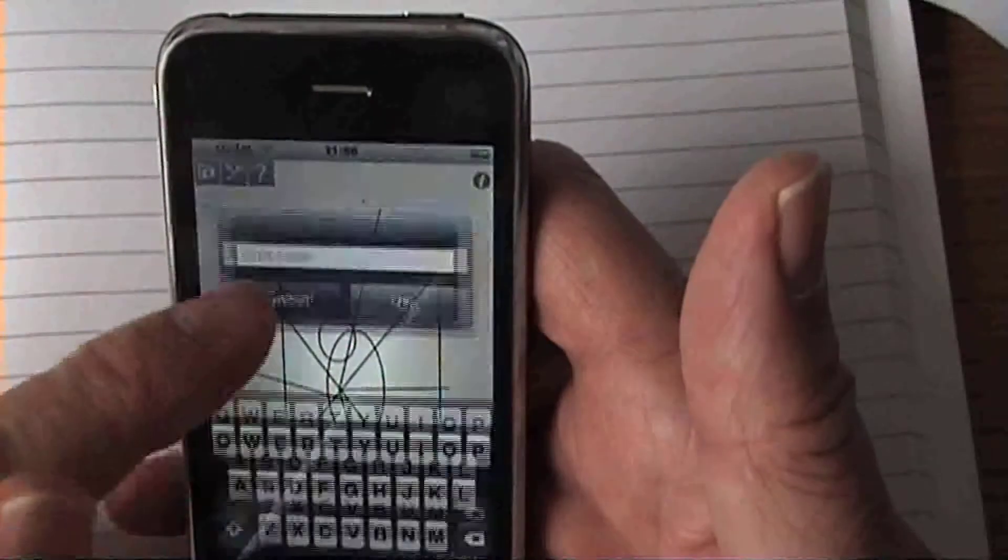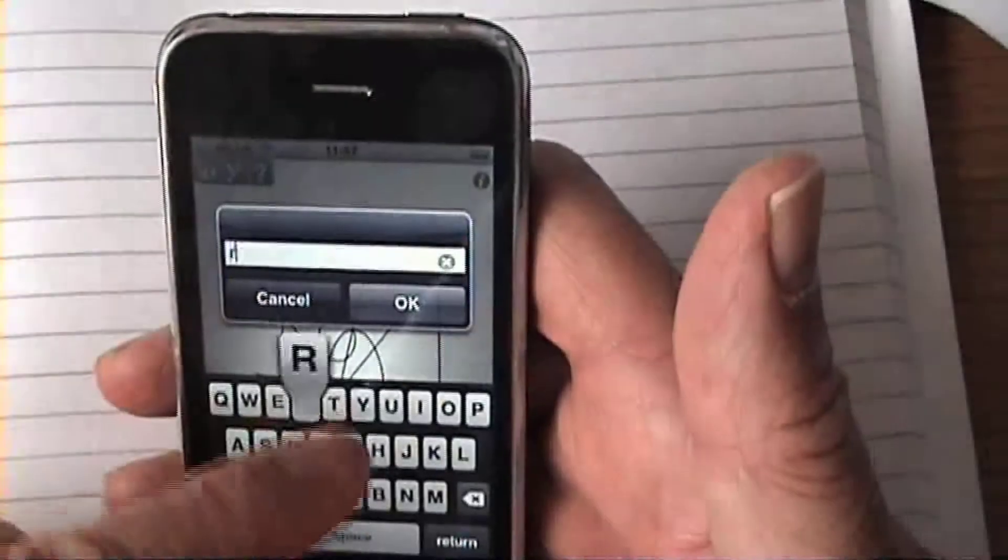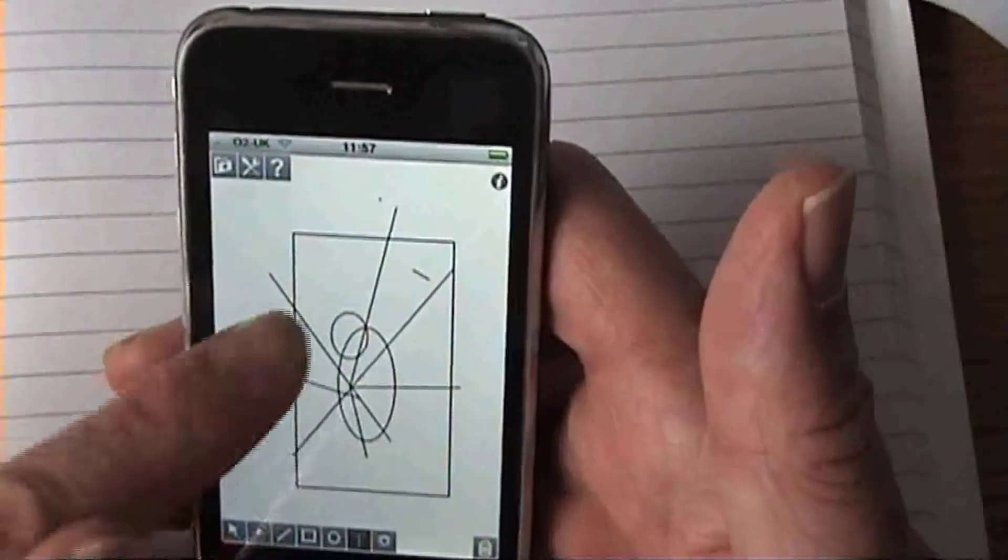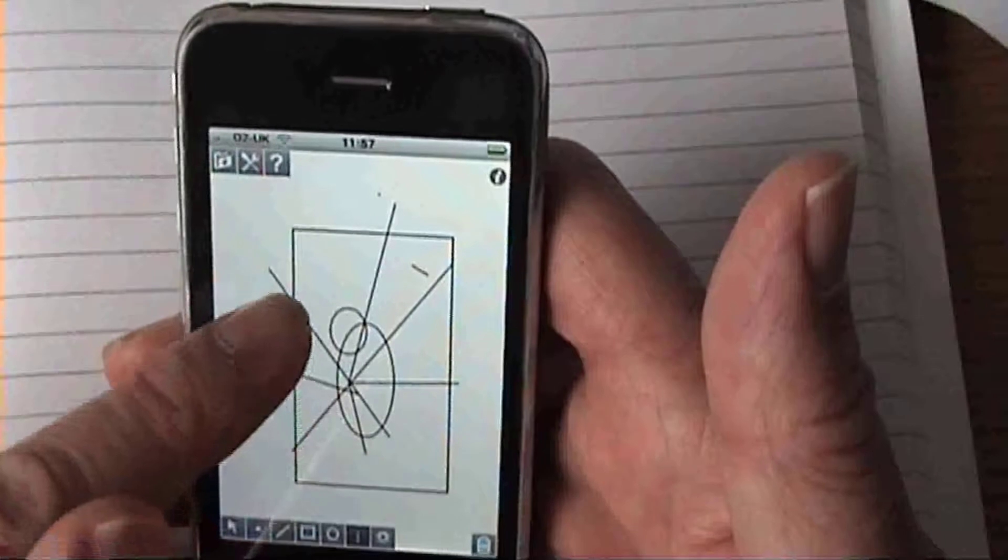Text is also very easy to do. You just text in blah blah blah and put it in and it comes into your drawing. Now where the hell has that gone? Oh there it is. Absolutely brilliant, really first class.